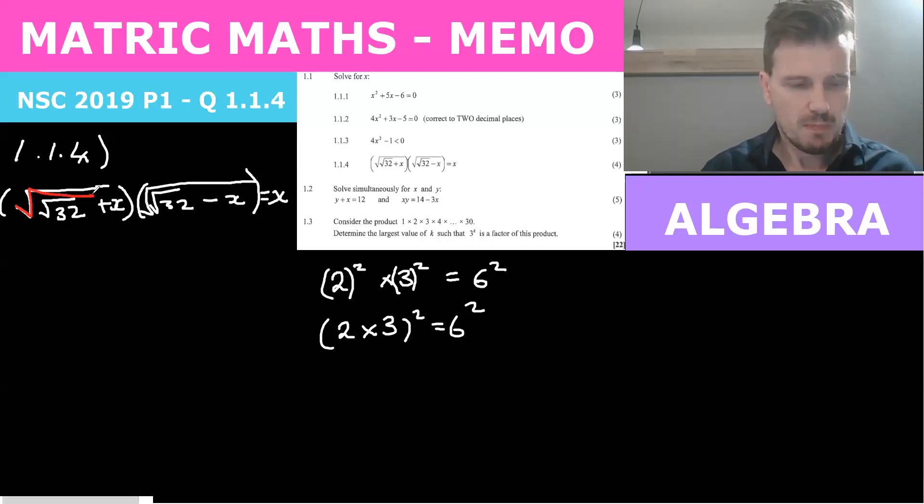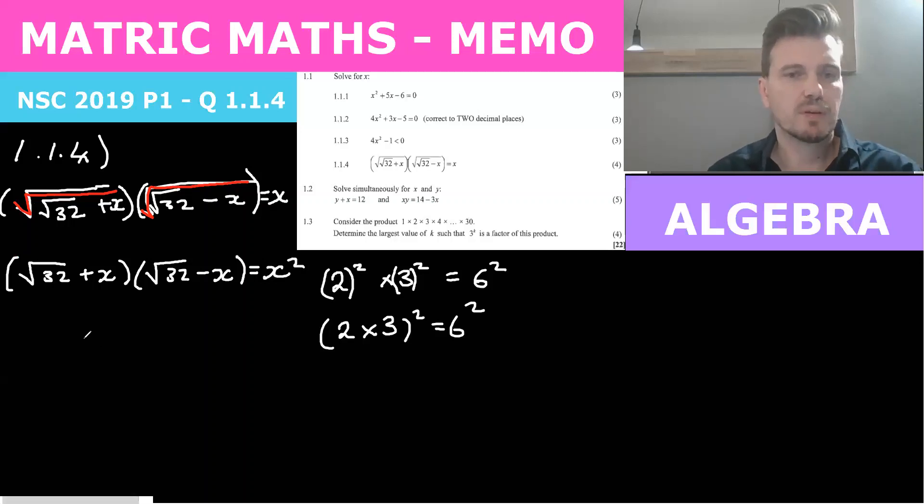So this thing here gets squared, and so does the x. So we get root 32 plus x. Now when you square a square root, the square root just goes away. And root 32 minus x. And we square the x and that becomes x squared.